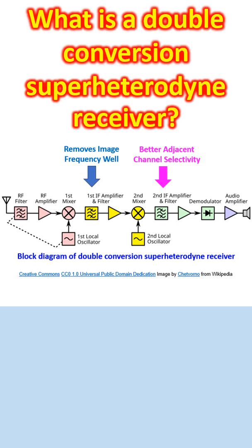In many of the modern communication receivers, multiple successive stages of frequency conversions with multiple intermediate frequencies are used.